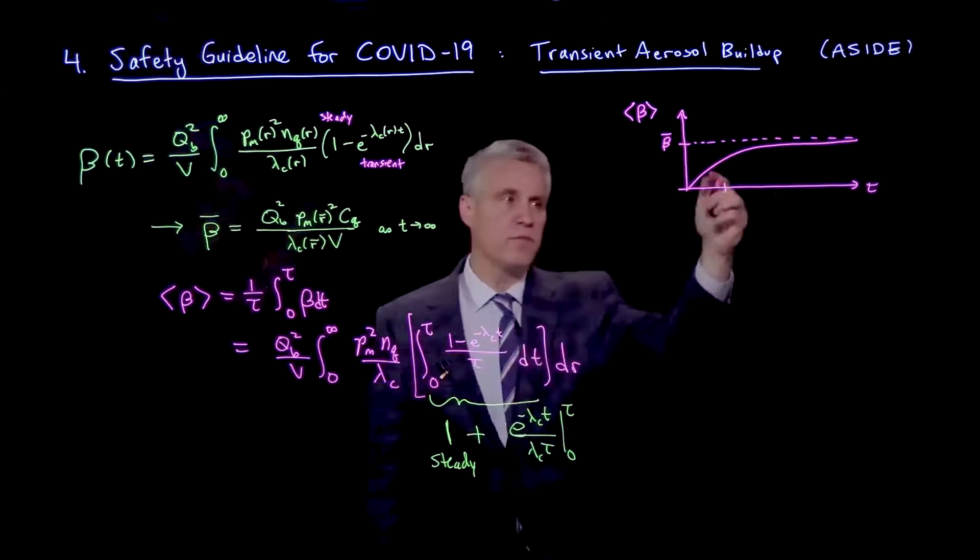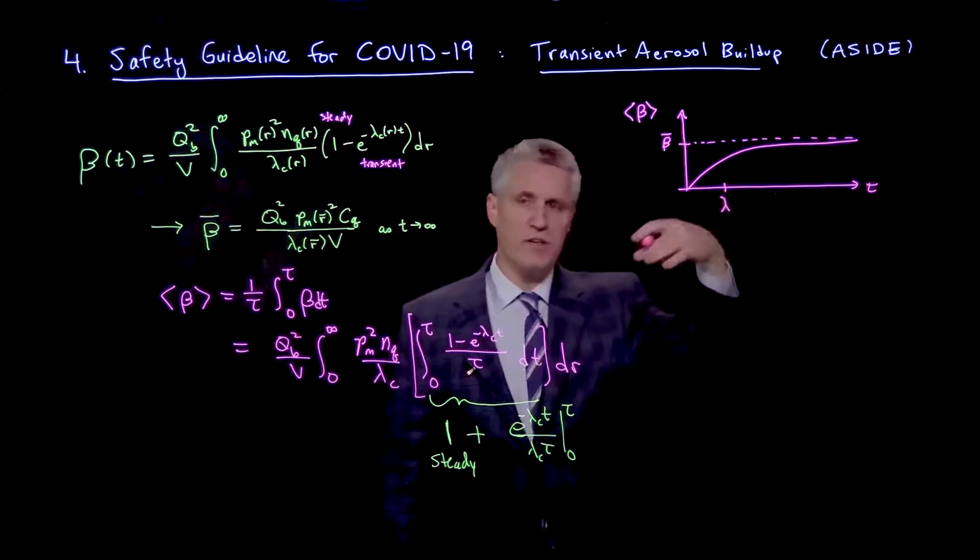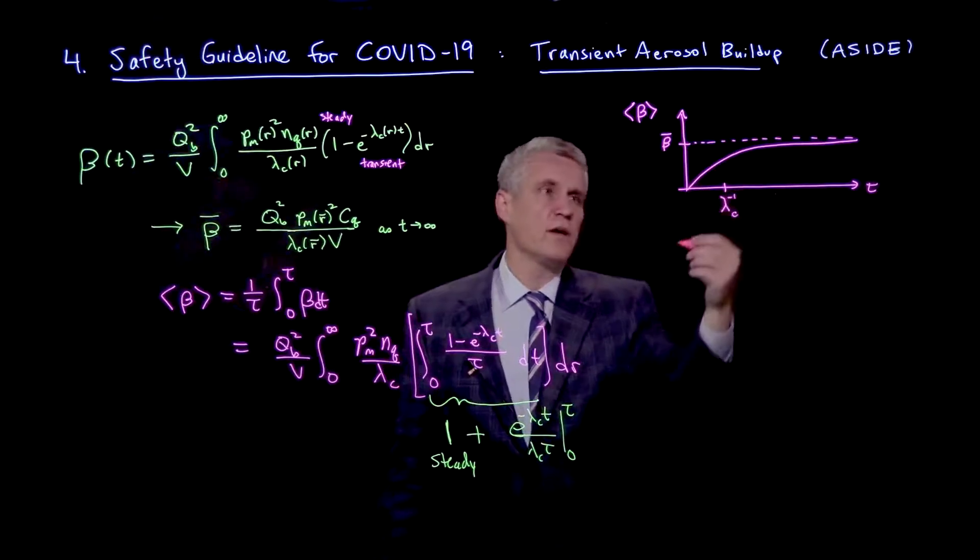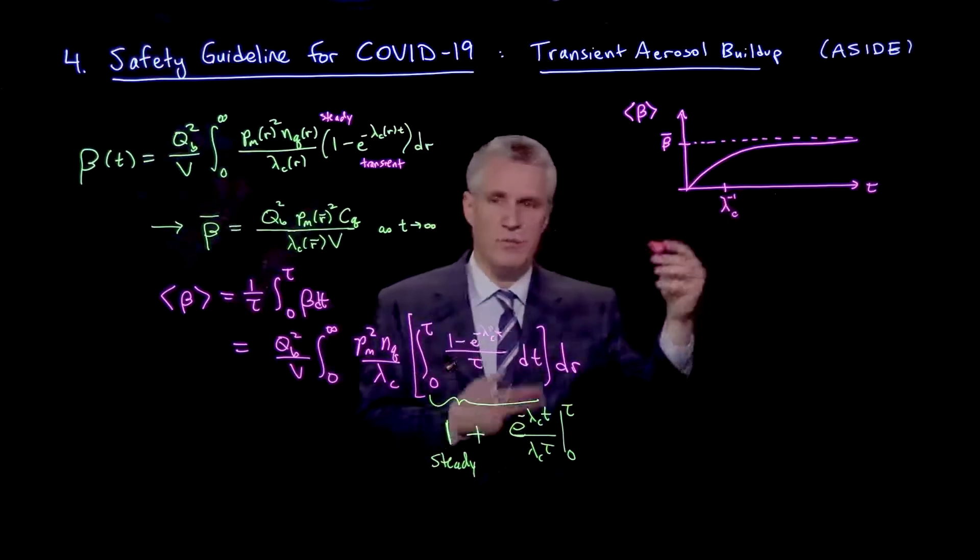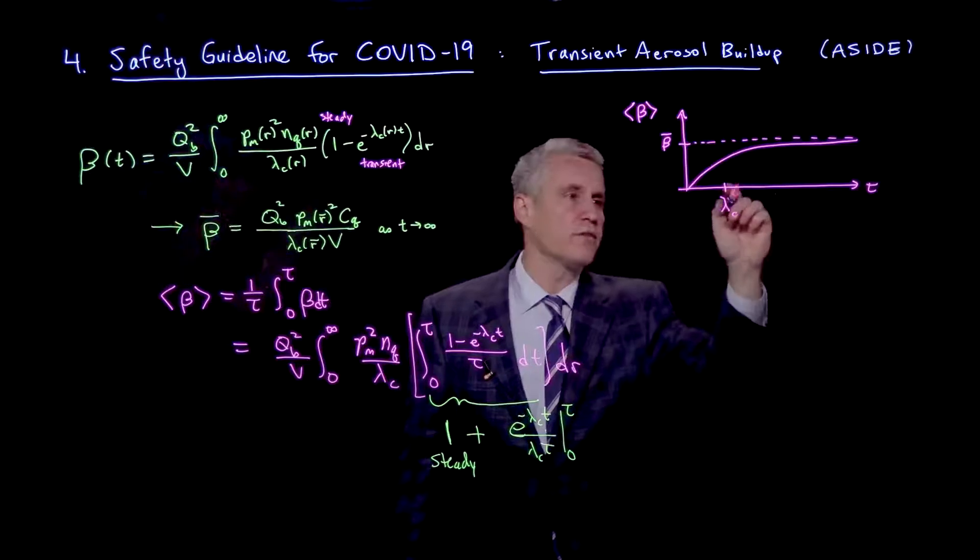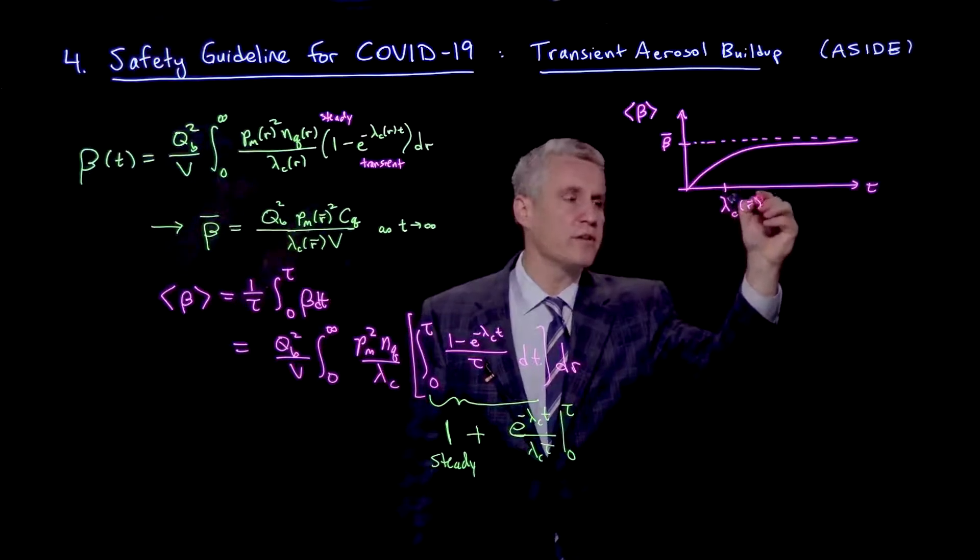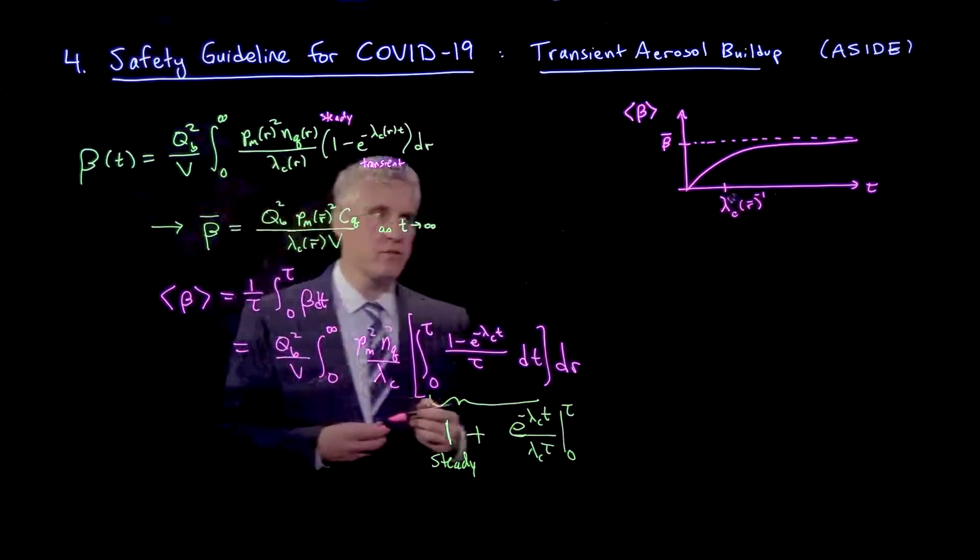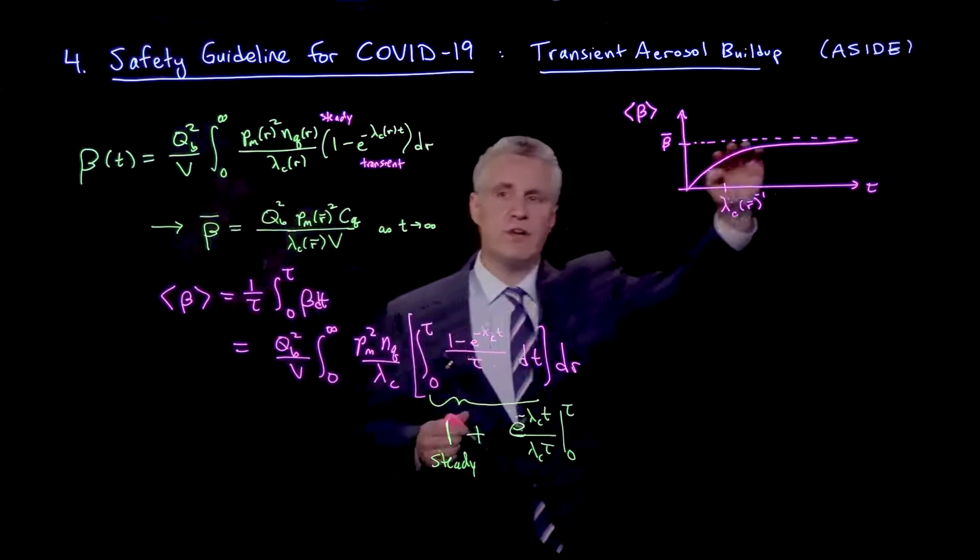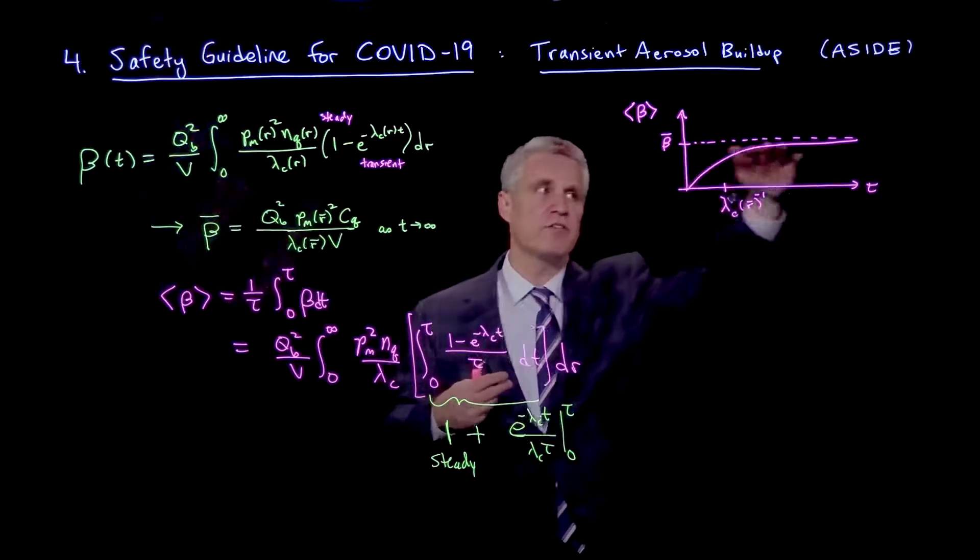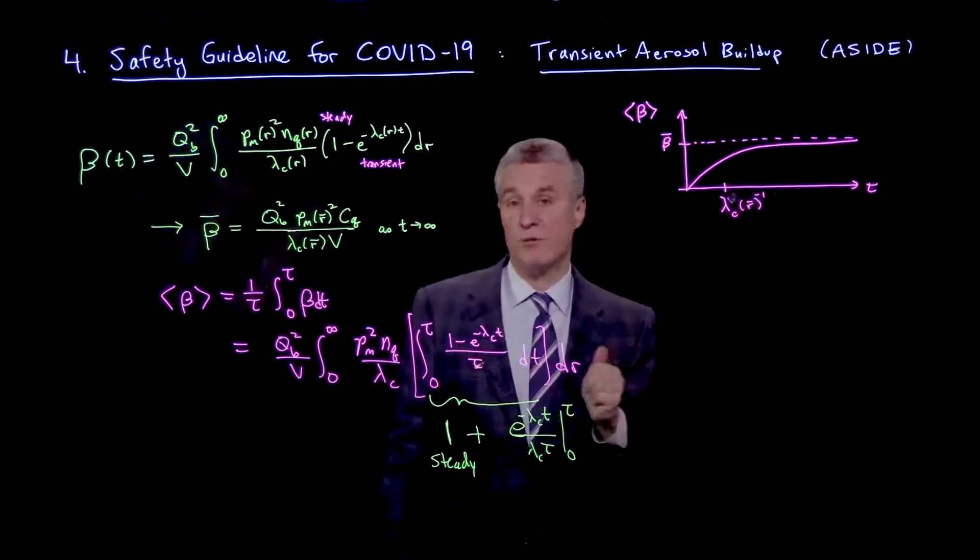Where the time for that transition is the inverse of the relaxation time. Although there's not a precise value of that, but if we want to keep actually a scale for it, it's going to be evaluated at that value R bar that I mentioned. That gives you a rough sense of the overall relaxation. So this is the buildup of the aerosol concentration in the room once the affected person has entered. And eventually, there's sort of a steady transmission rate to everyone else in the room.